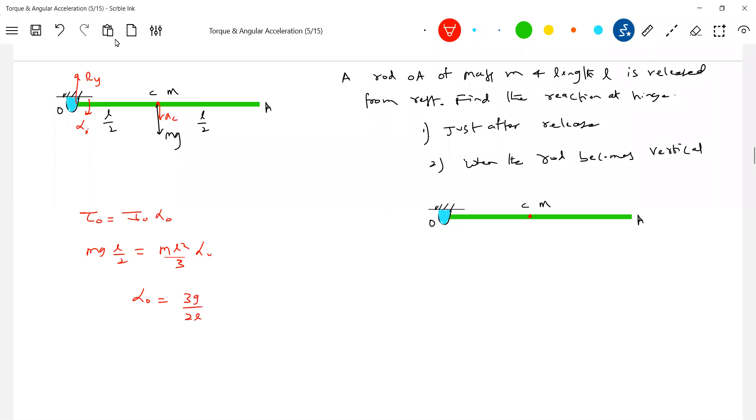Then what is the acceleration of center of mass? ac should be equal to l by 2 alpha. This should be equal to how much? 3g by 4. Then we'll write the equation. Mg minus ry is equal to mac. This is m 3g by 4. So what is ry equal to? Mg minus 3mg by 4. So mg by 4.